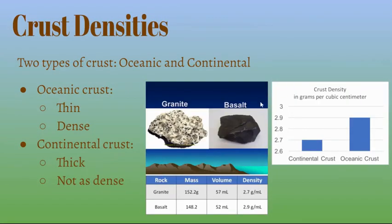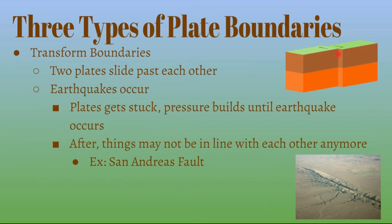There are two types of crust: oceanic and continental. Oceanic crust is very thin and dense compared to continental crust, which is thick and not as dense. Both types of crust are very thin compared to the other layers of Earth. There are three types of plate boundaries: transform, convergent, and divergent.